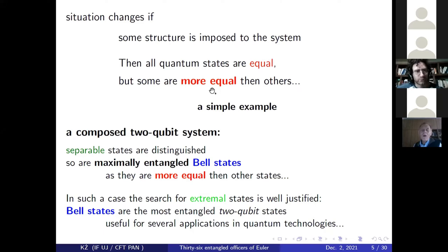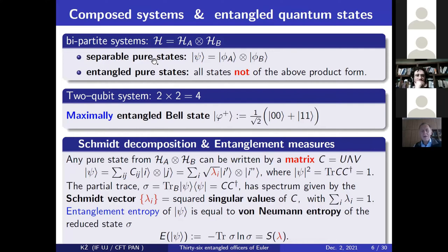For instance, if we consider a composite two-qubit system, I have a system and I can decompose it into two parts. So now, of course, we can distinguish separable states, product states, which are distinguished. And on the opposite end, we have maximally entangled Bell states. So obviously, they are special states. They are more equal than other states, just because I observed that this physical system we can split into two parts. So then we can look for those extremal states like Bell states, which are most entangled states for two-qubit systems.